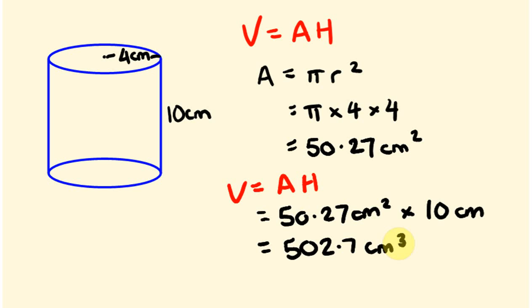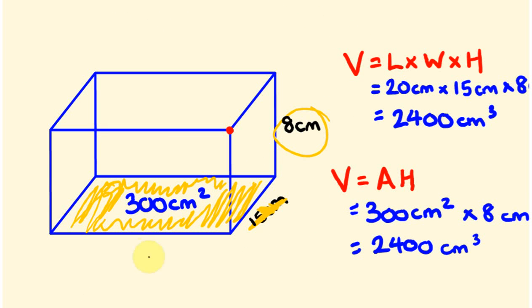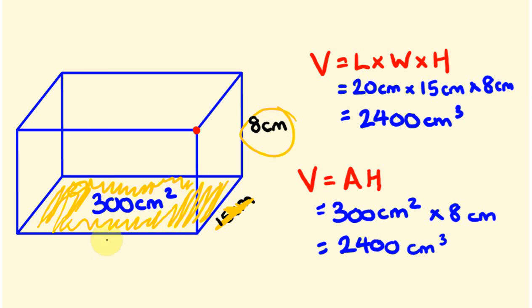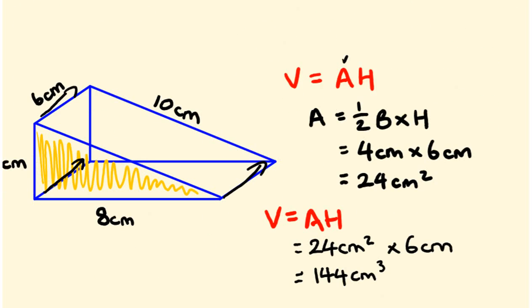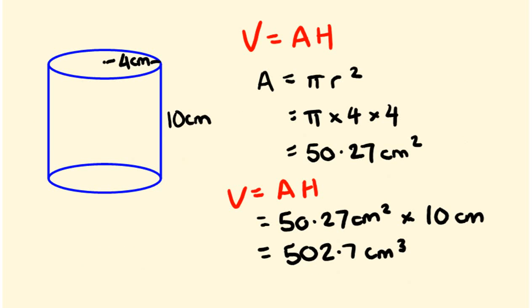So that's how to work out volume. You can either go length times width times height for a rectangular prism — so 20 centimeters by 15 centimeters by 8 centimeters — or you can use area times height for any prism or cylinder, which is what we did for the triangular prism and the cylinder. Hopefully that was some help. See you next time, bye.